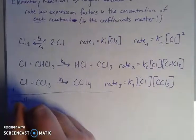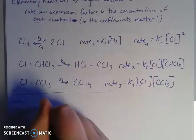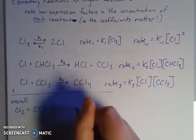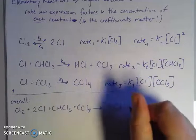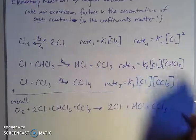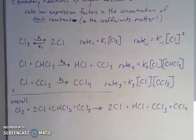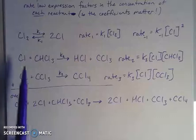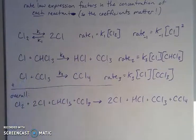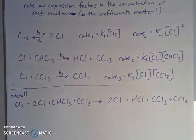So my overall is going to be Cl₂ plus 2Cl plus CHCl₃ plus CCl₃, and all of that gives me two chlorines, hydrochloric acid, CCl₃, and CCl₄. Now, if I have the same thing on both sides, we say that's an intermediate — something that formed along the way and then got used up along the way. Depending on how fast these individual elementary processes are happening, they impact the overall rate of the process.